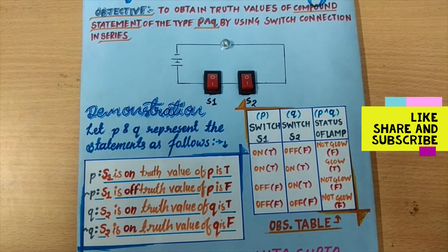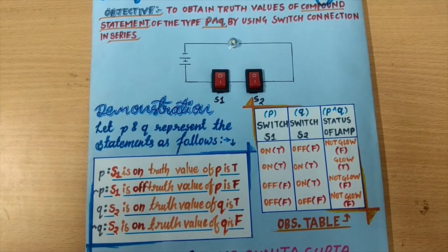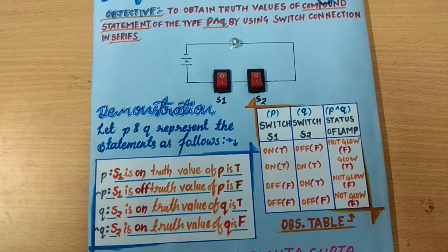Here we have the connection in series, so to blow the bulb, it is important to turn on both of the switches. If one is off, then the bulb doesn't blow.